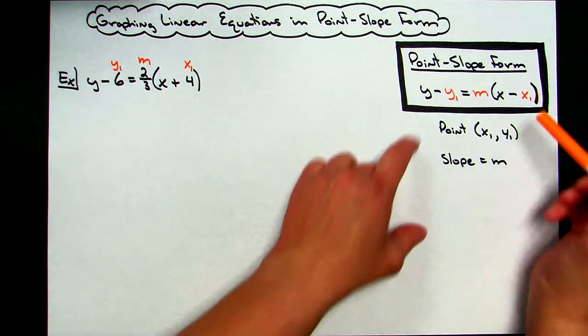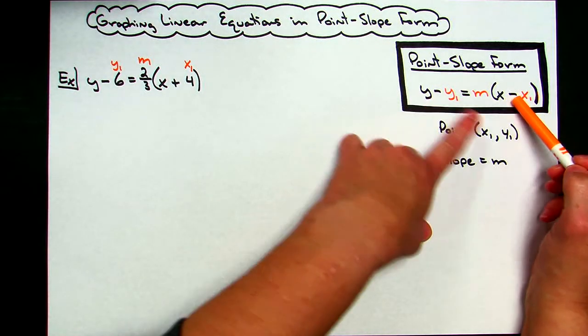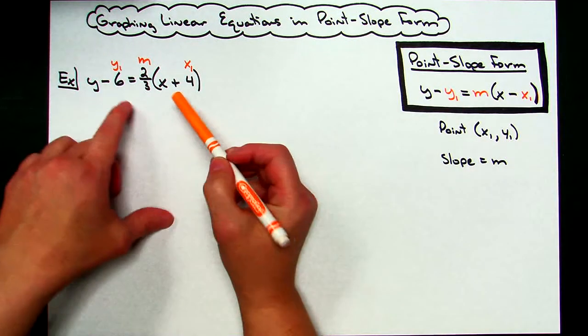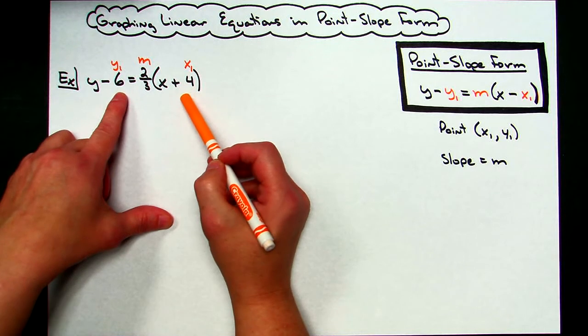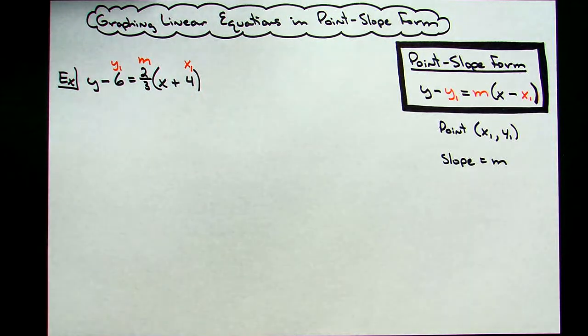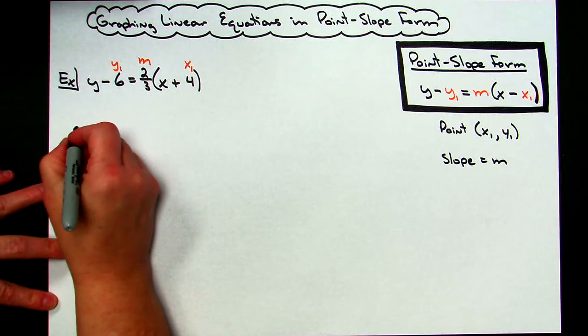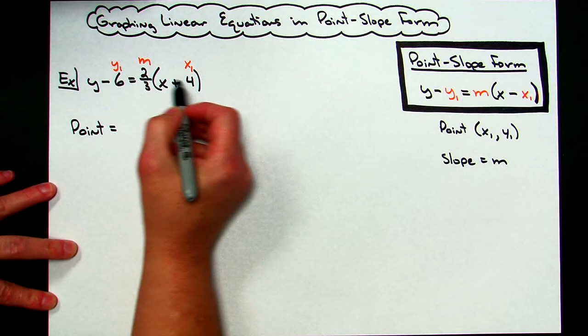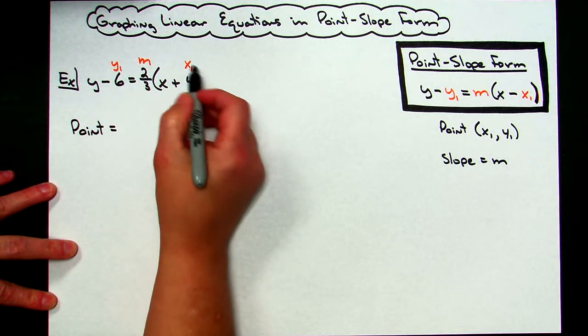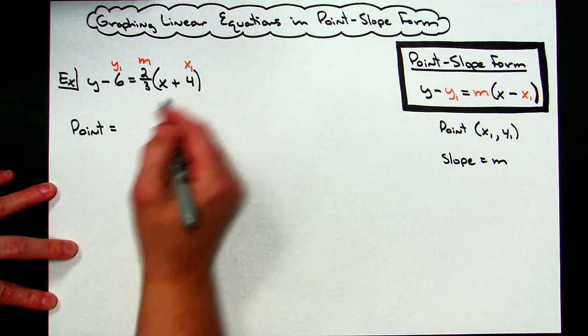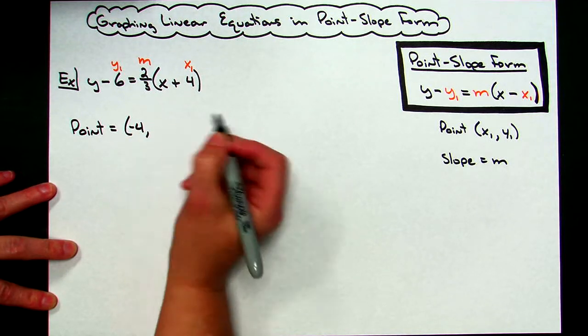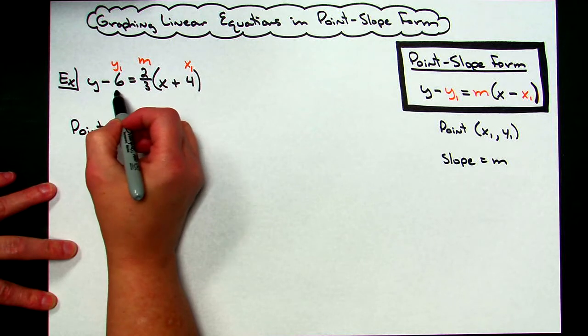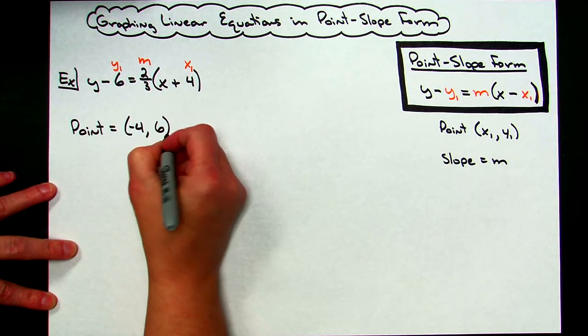Now, because of the way this formula is written, there's minus signs in the formula, and when I pull the point out, it becomes positive. Usually the easiest way to do this is to take the opposite of what I see here in the equation to generate my point. I'm going to generate my point by looking at my x sub 1 and my y sub 1. In the original equation, it is a positive 4, so I'm going to need a negative 4 for my point. And then over here for my y sub 1, it's showing a negative 6 in the original equation, so it's going to give me a positive 6 when I generate that point.